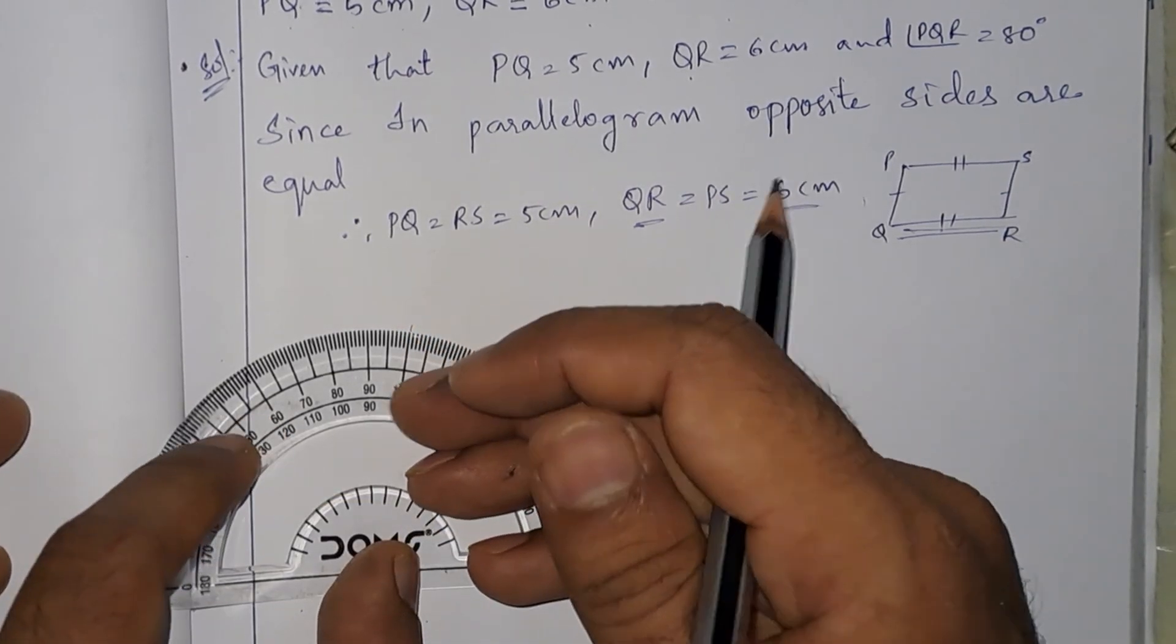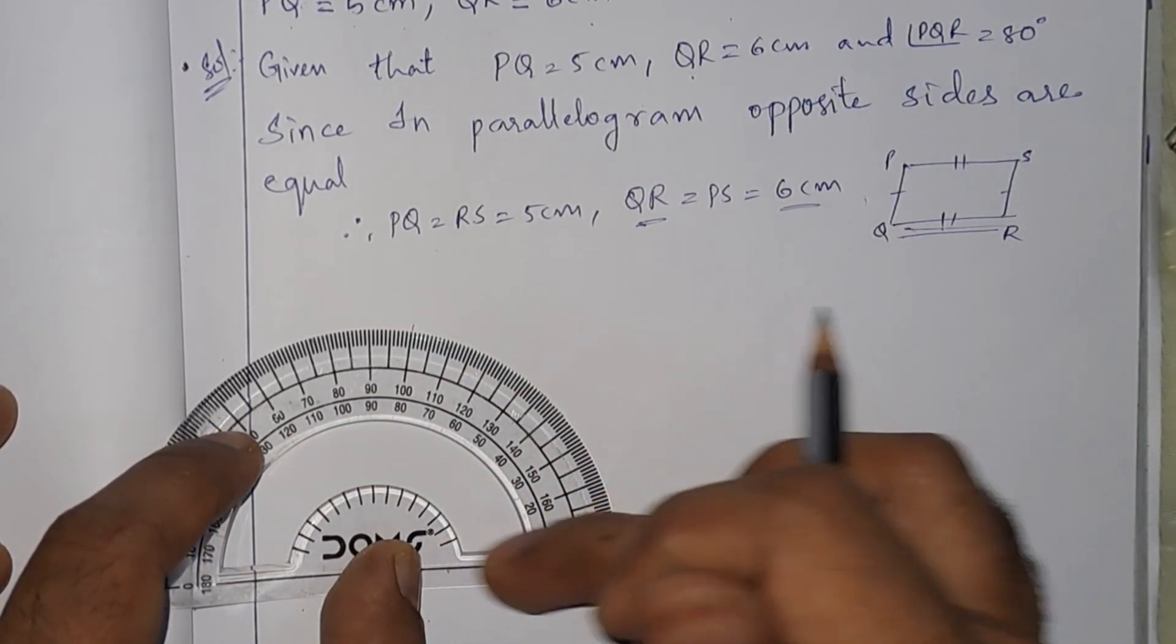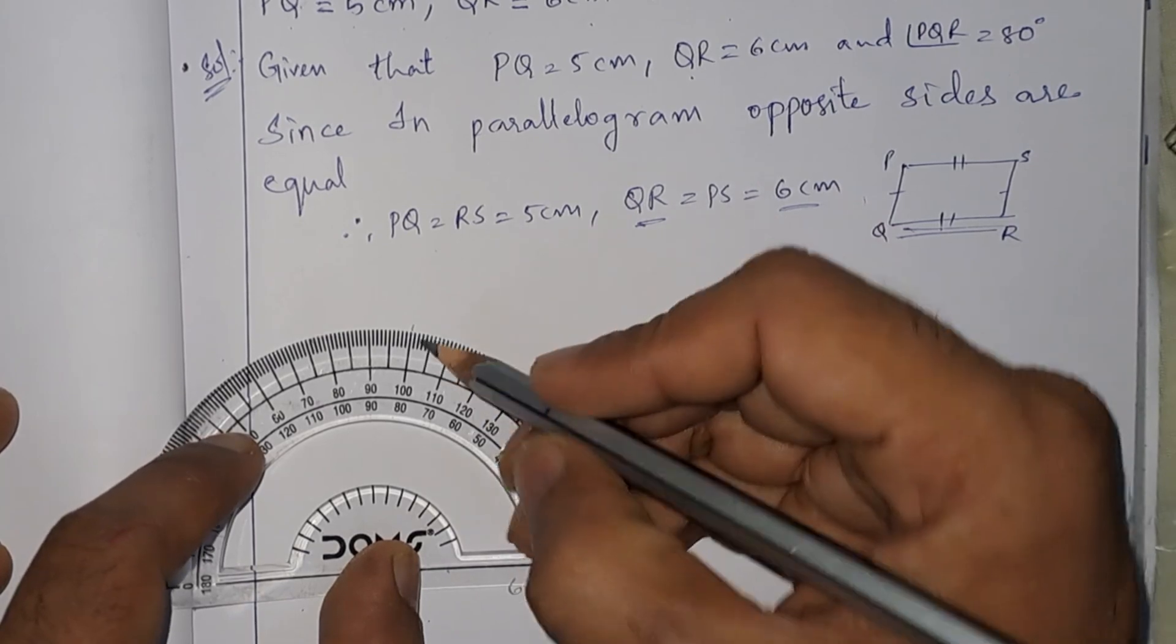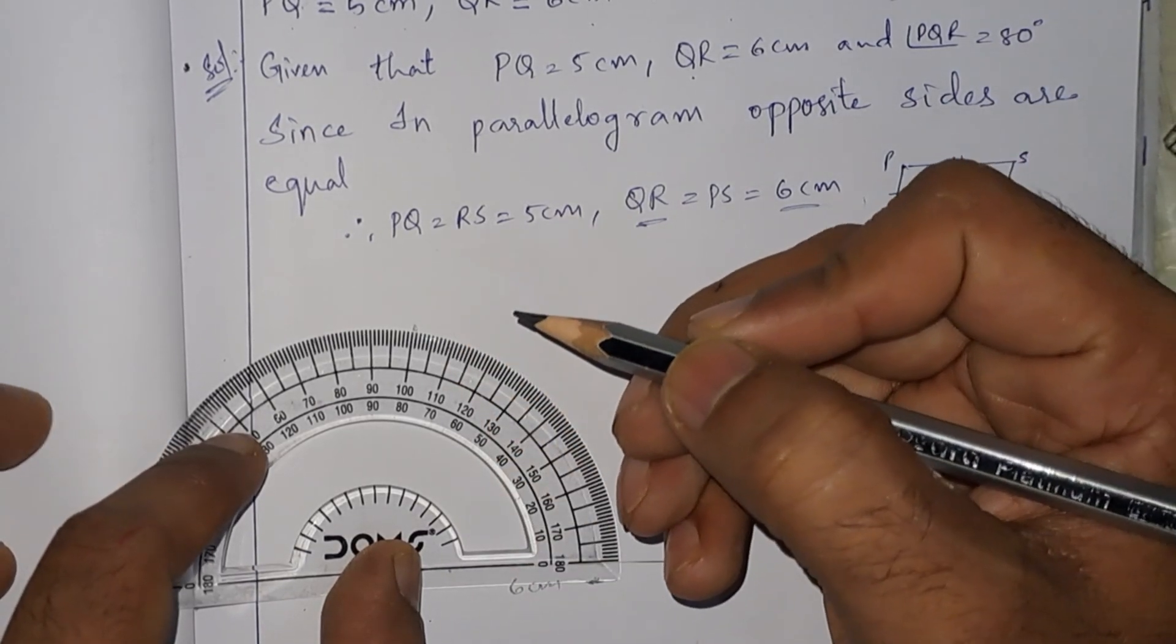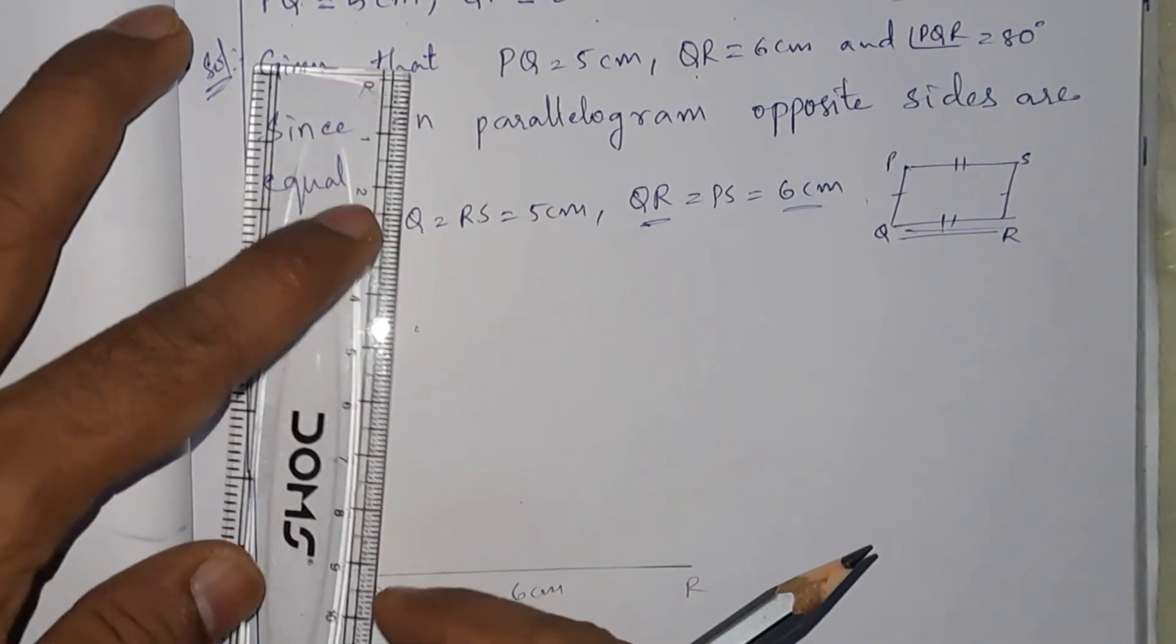You should not take from the other side because we have drawn the line here. So that's why this is the 80 degrees. Now let us draw a ray.